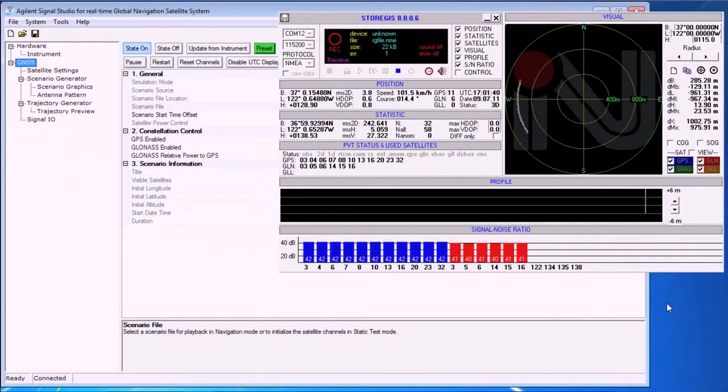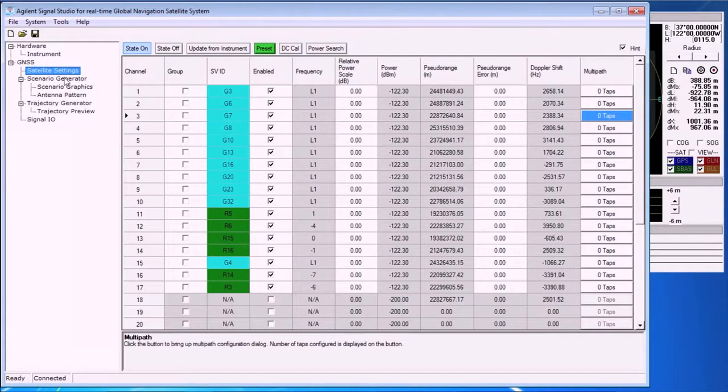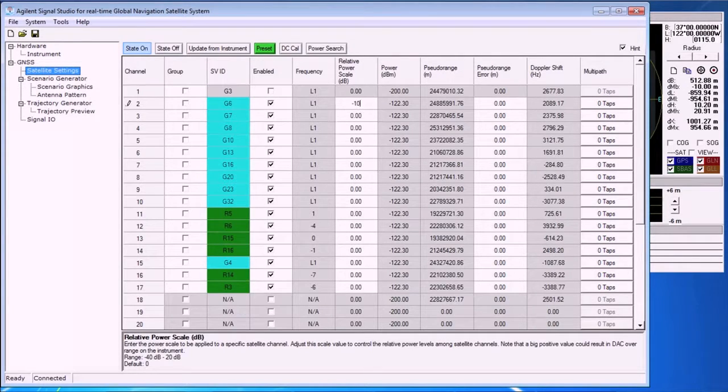For example, here on the satellite settings page, we can turn off GPS satellite 3 and reduce the power of satellite 6 by 10 dB. We can see the results in the GNSS receiver software.